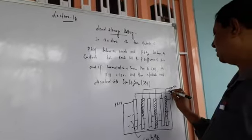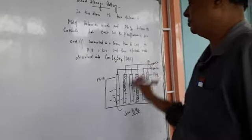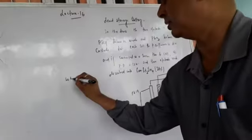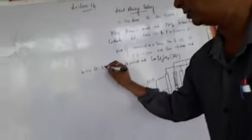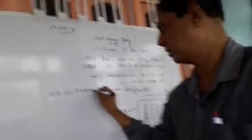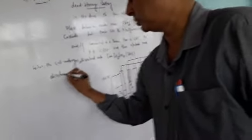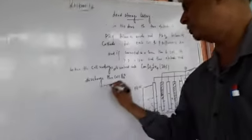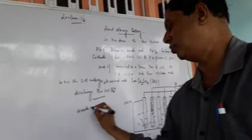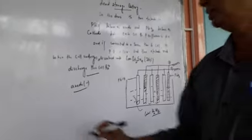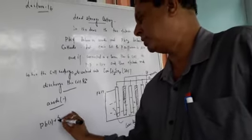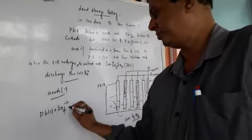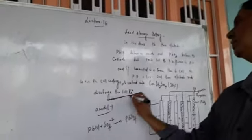The lead storage cell uses a solution of concentrated H₂SO₄. The lead anode is connected to the negative terminal and the cathode is connected to the positive terminal. When the cell undergoes discharge, the anode reaction is: Pb(s) + SO₄²⁻ → PbSO₄ + 2e⁻. This is the reaction when the cell is discharging.